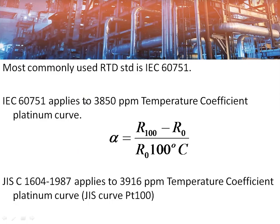IEC 751 is the universal standard for RTDs and this applies to platinum RTDs with a temperature coefficient of resistance of 3850 ppm, which comes to 0.00385 ohm per ohm per degree centigrade. This is the equation for that.